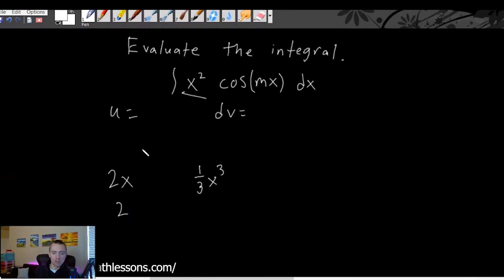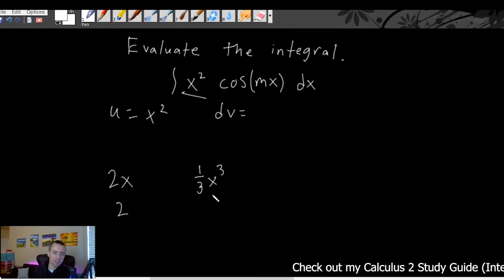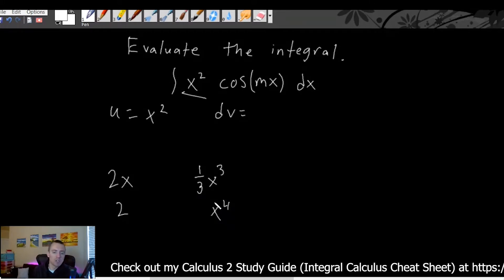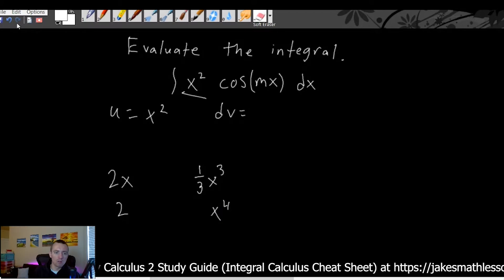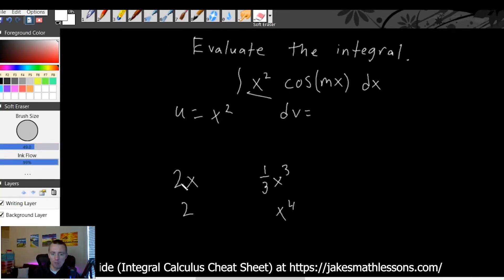If we raise our power and get x cubed, and then take the antiderivative a second time, we end up with x to the fourth, and if that keeps going it's never going to reach an end — it's just going to infinitely loop. I'll explain more about what that means as we work through this.